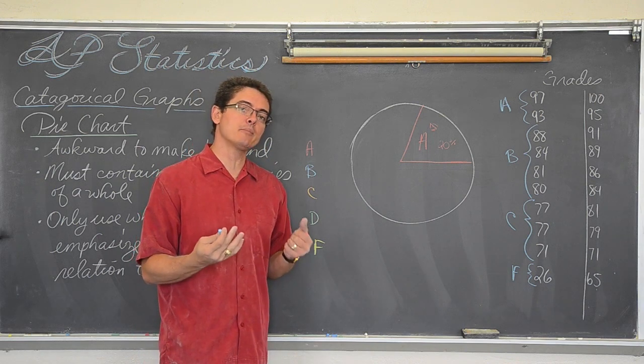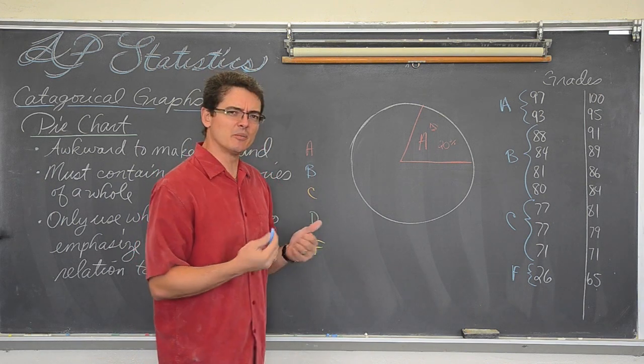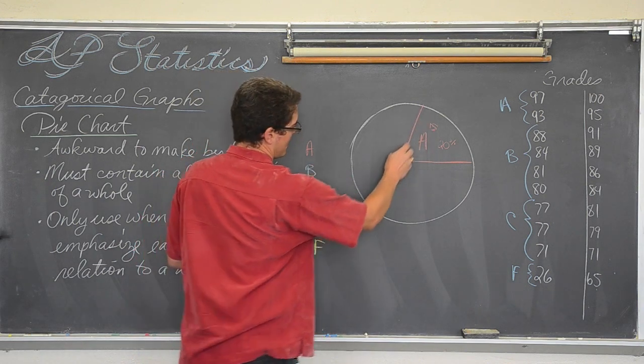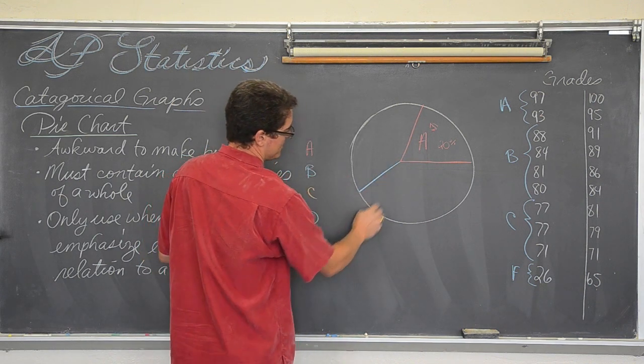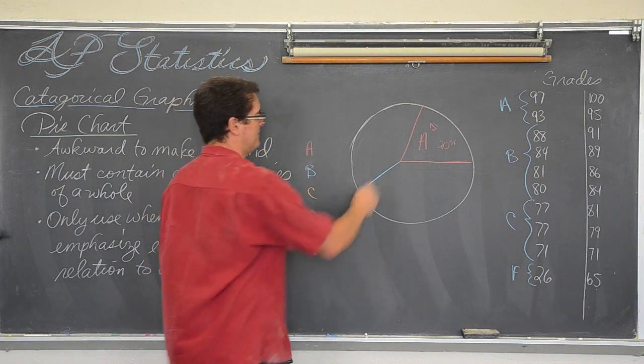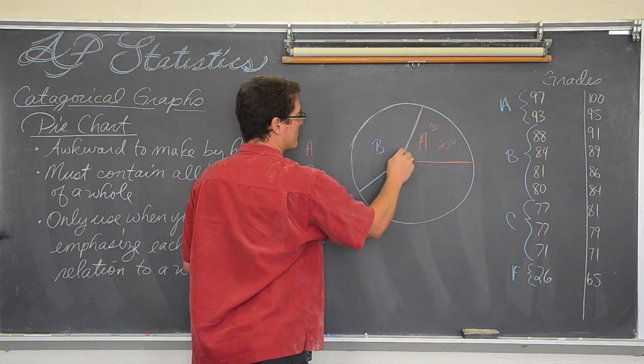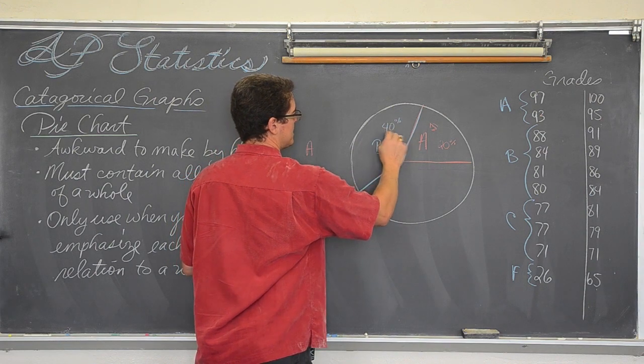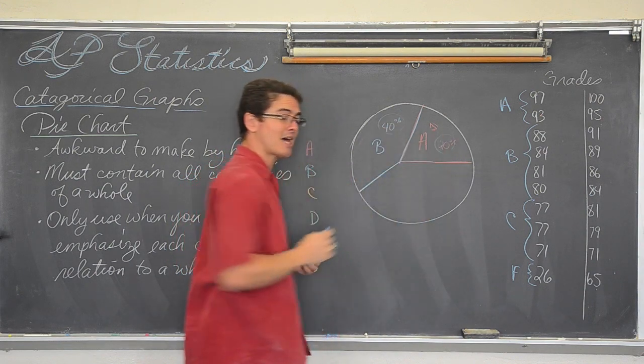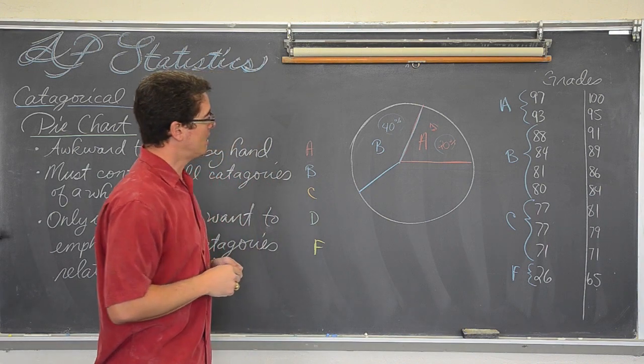Now, we have B's, there are four people that have a B. Well, four out of ten is forty percent. That is a little bit less than half, so I am not going to go half the circle, but a little bit less. And again, I am trying to guesstimate these values, and that is again where the awkwardness comes in when you are doing this by hand. My B's represent forty percent of my class. We do not put these percents inside of a pie chart.